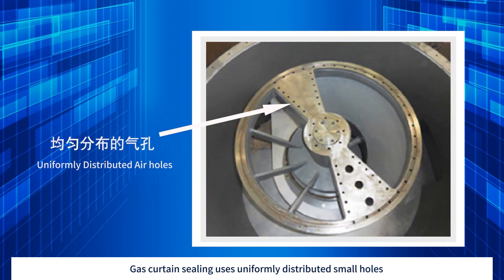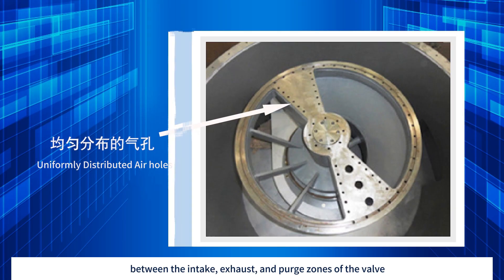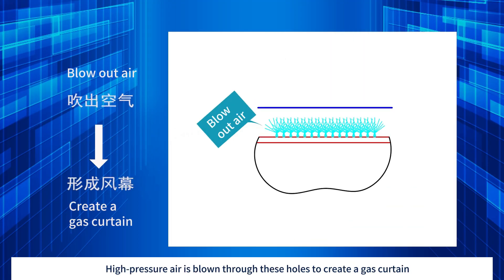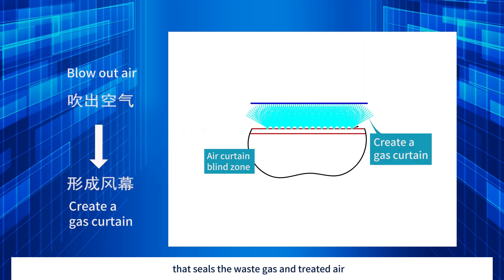Gas curtain sealing uses uniformly distributed small holes between the intake, exhaust, and purge zones of the valve. High pressure air is blown through these holes to create a gas curtain that seals the waste gas and treated air.